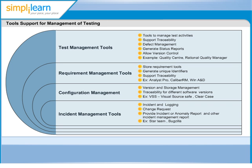An incident management tool is also known as a defect tracking tool, a defect management tool, a bug tracking tool, or a bug management tool. Incident management tools make it much easier to keep track of incidents over time. Characteristics include support for incident logging, change requests, and incident or anomaly reports. Examples of incident management tools are Starteam and Bugzilla.